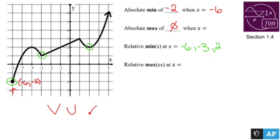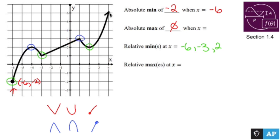The relative maximums are where things go up and peak out. That happens at two spots. You're not going to include the far right because that's going on forever and will never reach a maximum — it's going to keep going. So negative four is going to be a relative max and positive one is going to be a relative max.